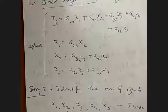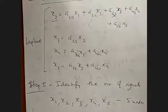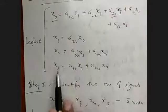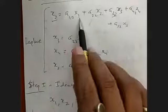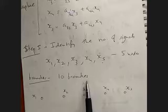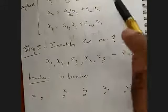For drawing the signal flow graph, we first have to identify the number of signals. The signals are x1, x2, x3, x4, and x5 — so we have five signals. Then we identify the number of branches, which will be equal to the number of terms in the equations.